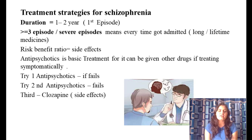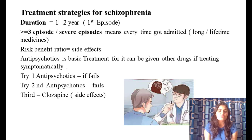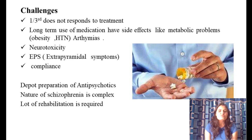Treatment strategies: for a first episode, treatment duration is typically one to two years. If there are three or more episodes, or episodes that are very severe requiring repeated admission, lifelong medication is recommended. The risk-benefit ratio is considered given the side effects of antipsychotics. The drug of choice is antipsychotic medication.